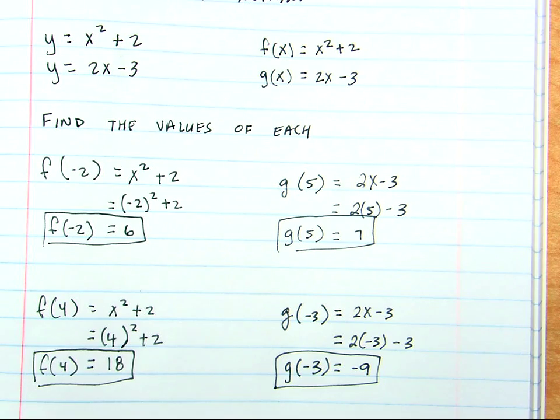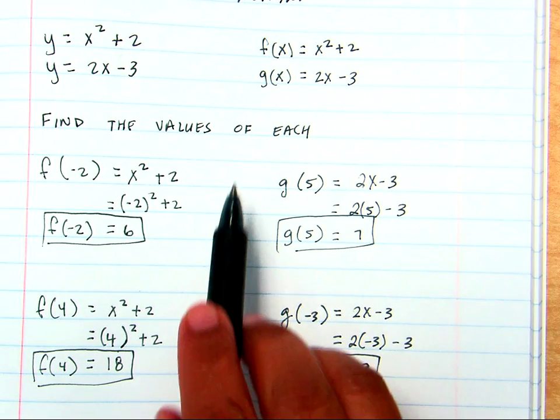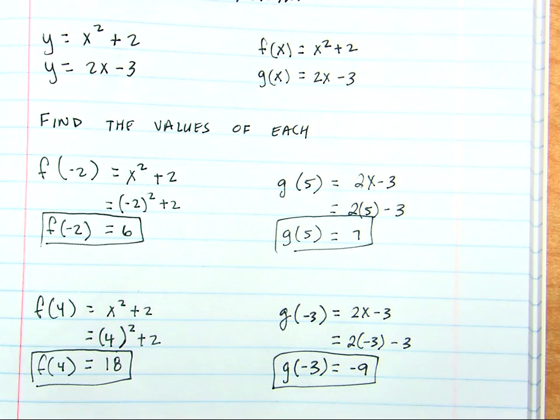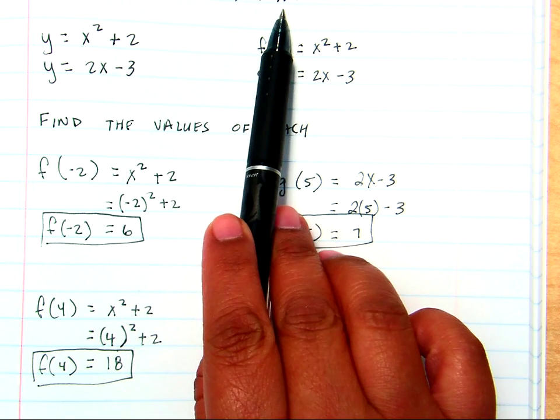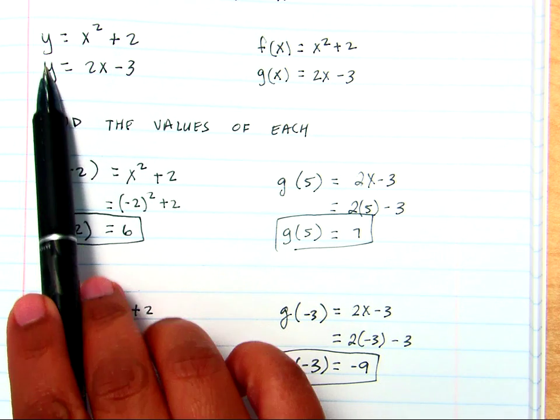So, g of negative 3 is negative 9. So, key things to remember about this. f of x, g of x, whatever letter you want to use of x, that's called function notation.